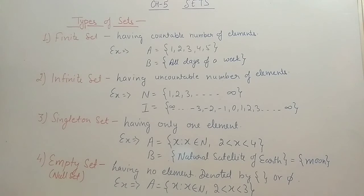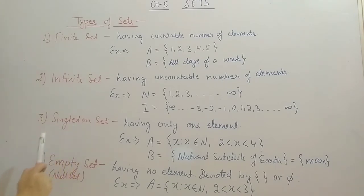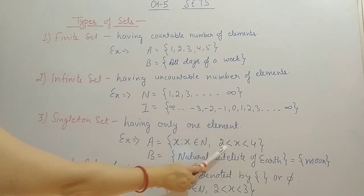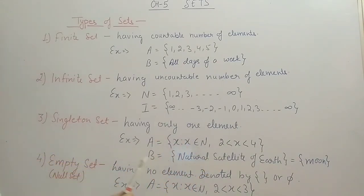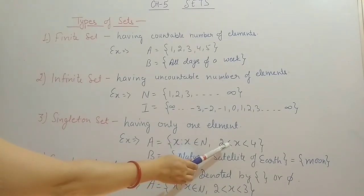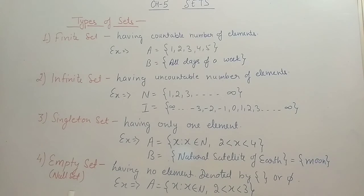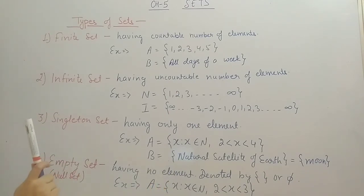The third type is the singleton set. 'Single' means one — a set having only one element. For example, A = {X | X ∈ N, 2 < X < 4}: greater than 2 and less than 4, only 3 will come. So A has only one element, which is 3 — A is a singleton set. Another example is the natural satellite of Earth — Earth has only one natural satellite, the Moon. So this set also has only one element and is a singleton set.